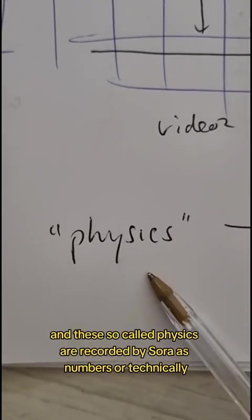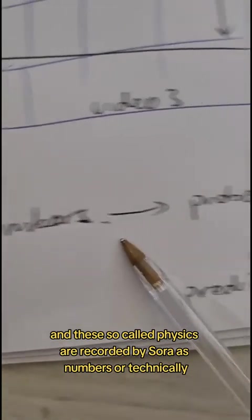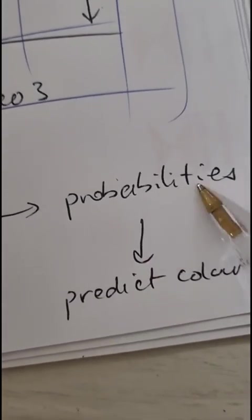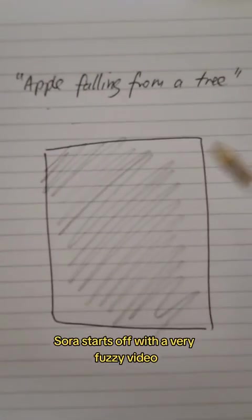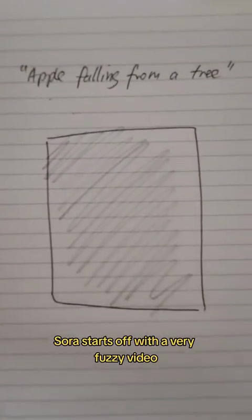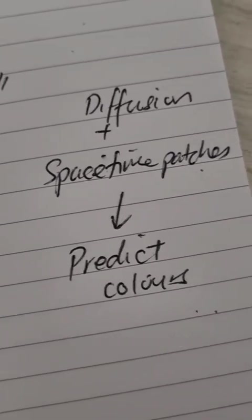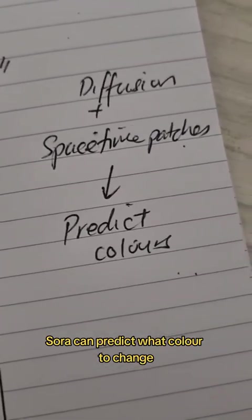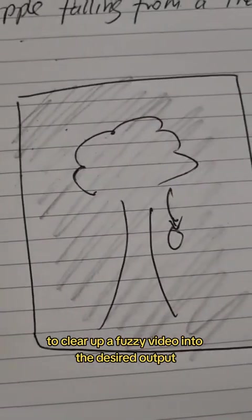And these so-called physics are recorded by Sora as numbers, or technically, probabilities, which help Sora predict colors. And so, to produce this sort of video, Sora starts off with a very fuzzy video. And using diffusion and space-time patches, Sora can predict what colors to change to clear up a fuzzy video into the desired output.